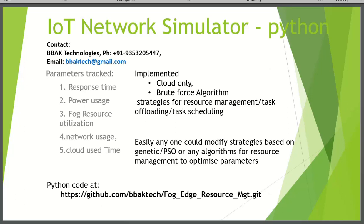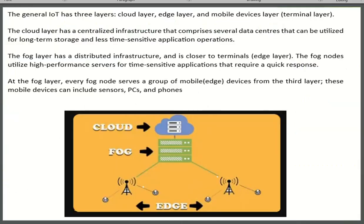Here I would like to give an introduction about the IoT network simulator. Before going to that, I would like to give some introduction about what an IoT network is. Now you are able to see the diagram. There are three layers: cloud, fog, and then edge. This is the edge layer — the bottom lowest layer — and the topmost layer is the cloud.